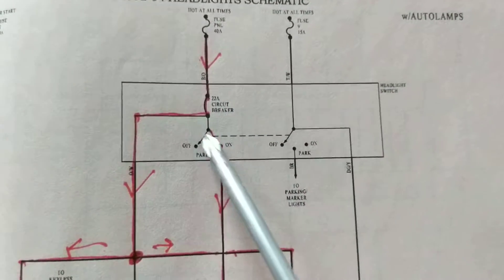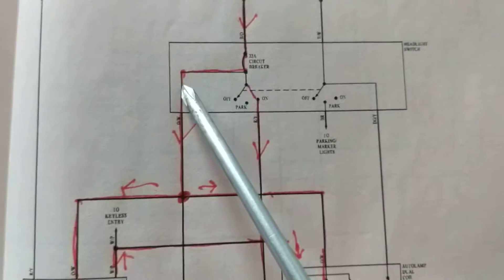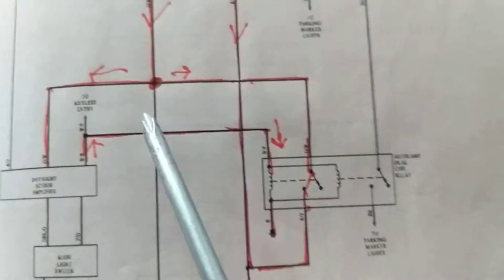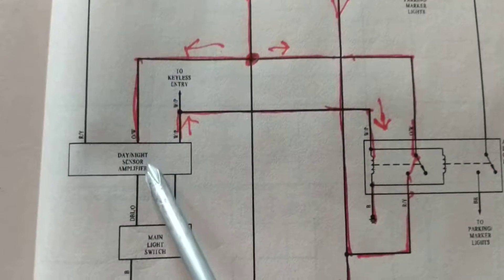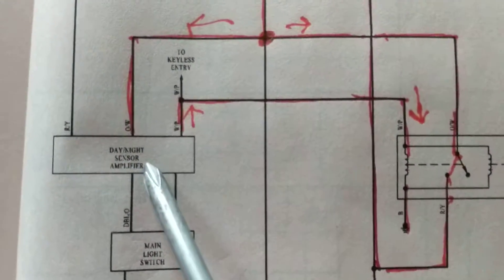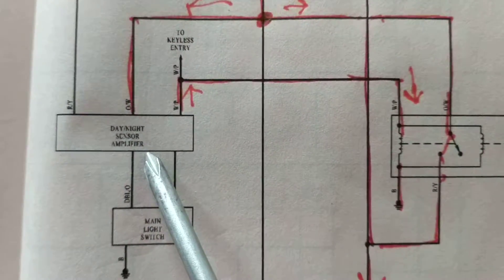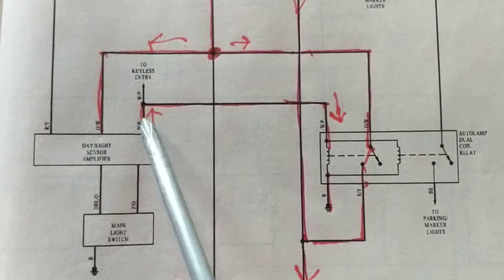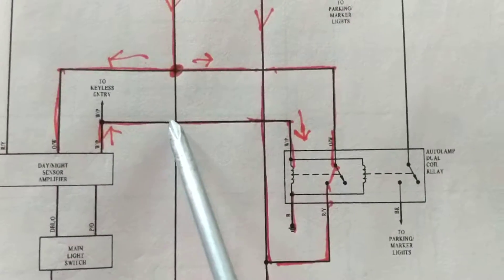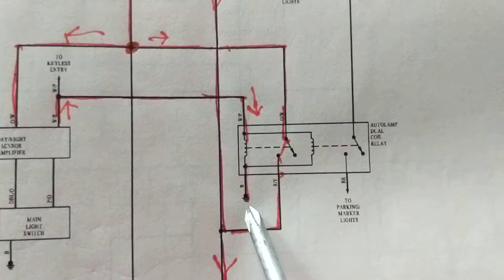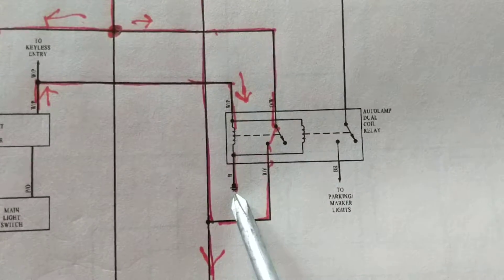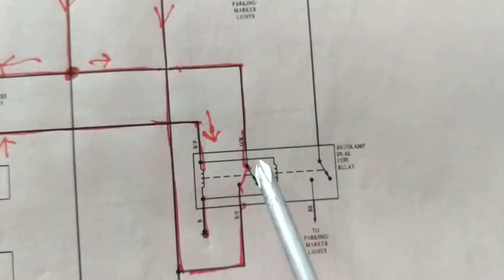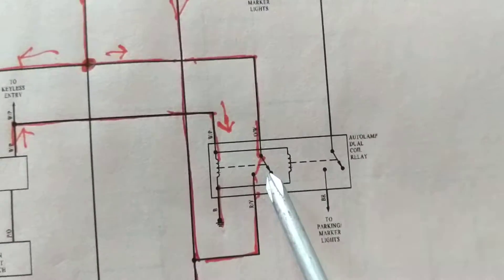Current can still flow. Forget about the switch. Current can still flow. Can't flow over here, this has not been activated yet. Current will flow here. Daytime unit sensor amplifier to activate this. Once this is activated, current will flow to this coil in this relay. You see the orange, at rest position.